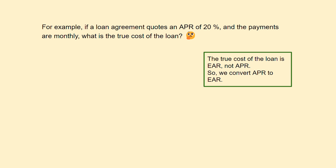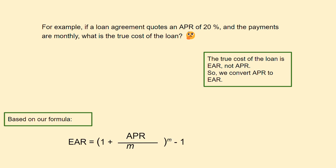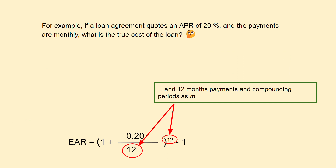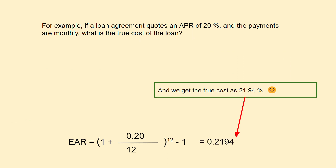So we convert APR to EAR. Based on our formula, we plug in 20% as our APR and 12 months of payments and compounding periods as M. And we get the true cost of 21.94%. Thank you!